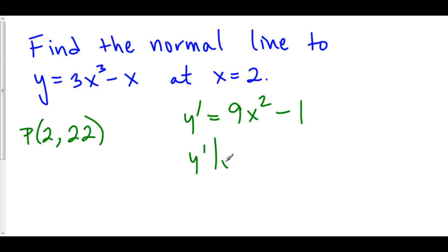So, y prime at x equals 2 is equal to 2 squared is 4 times 9 is 36 minus 1 is 35. And, therefore, the slope of our normal line is the negative reciprocal of the derivative, which is negative 1 over 35. We've got a point. We've got a slope. We can use point-slope form. y minus y1 is equal to m times x minus x1.